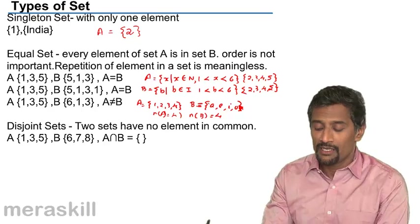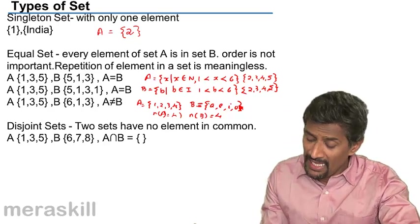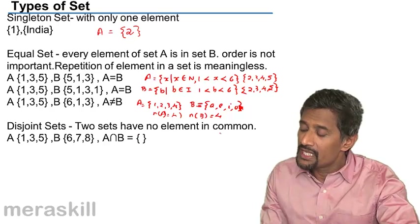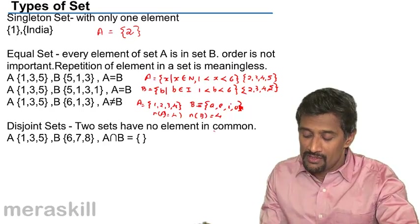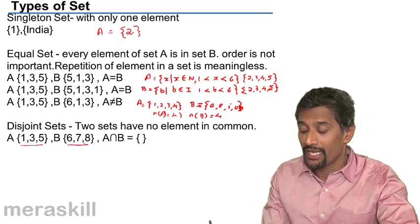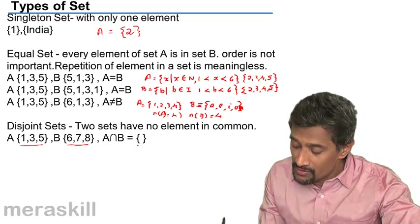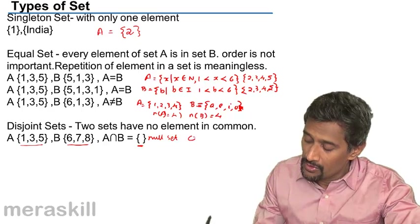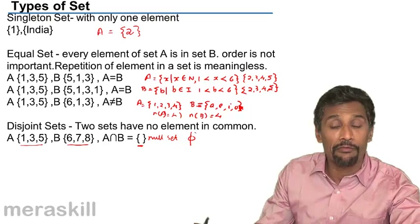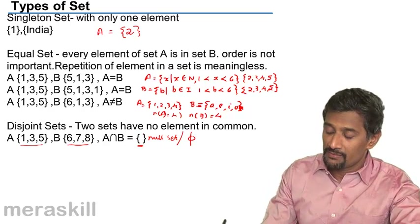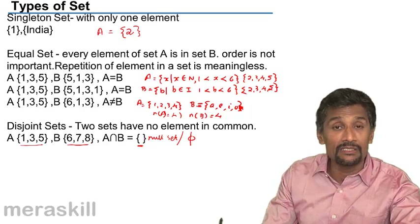We also have disjoint sets — two sets which have no element in common. For example, A is {1, 3, 5} and B is {6, 7, 8}, so A intersection B is what is called a null set, which is also represented as phi or an empty brace bracket.